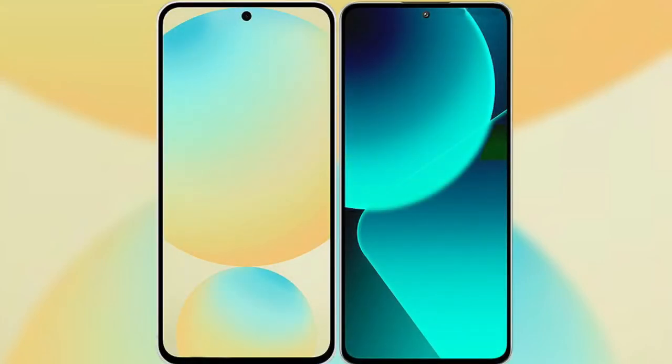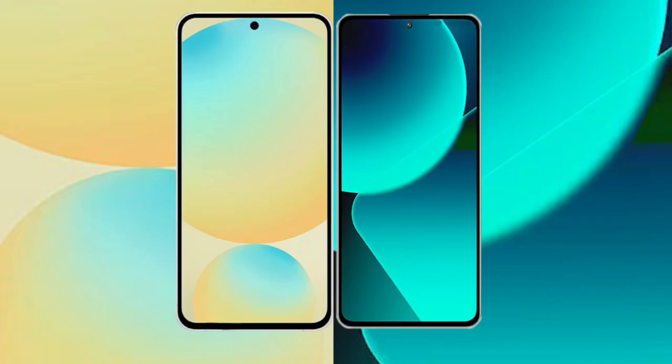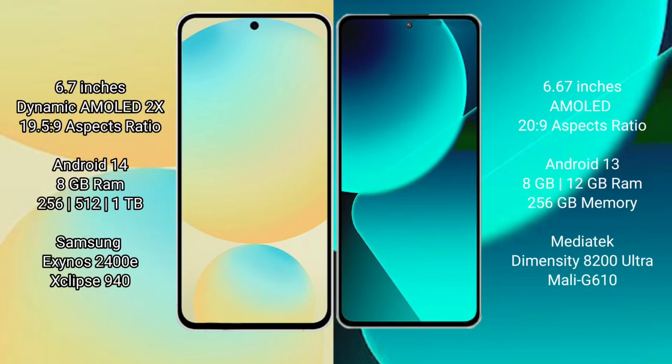I will compare the new Samsung Galaxy S24 FE with Xiaomi 13T. Samsung Galaxy S24 FE has a 6.7 inch Dynamic AMOLED display with an aspect ratio of 19.5:9. Xiaomi 13T has a 6.67 inch AMOLED display with an aspect ratio of 20:9.